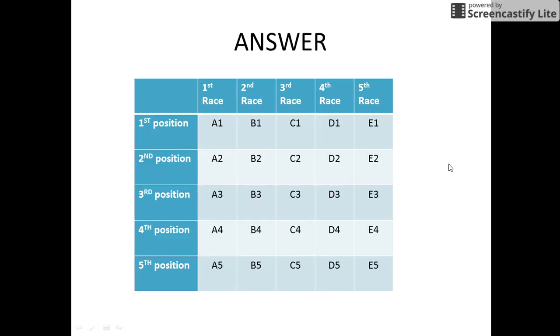We assume one of the possible outcomes of these races as the first position being backed by A1, B1, C1, D1 and E1 respectively in their groups.